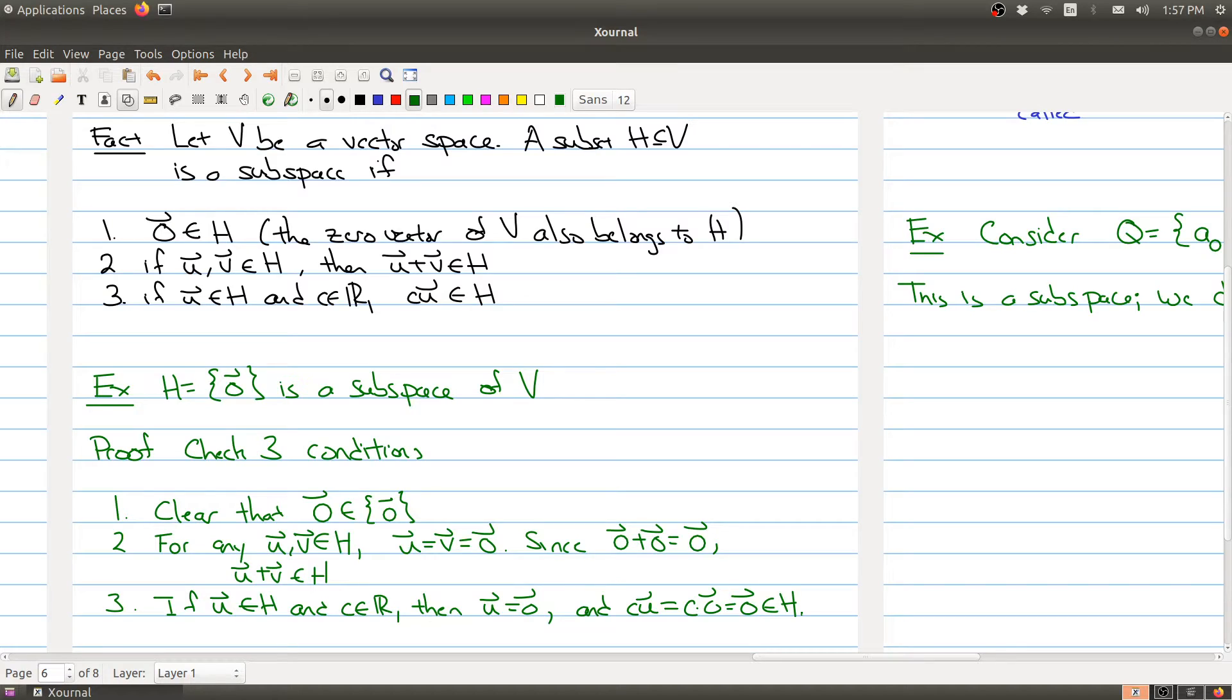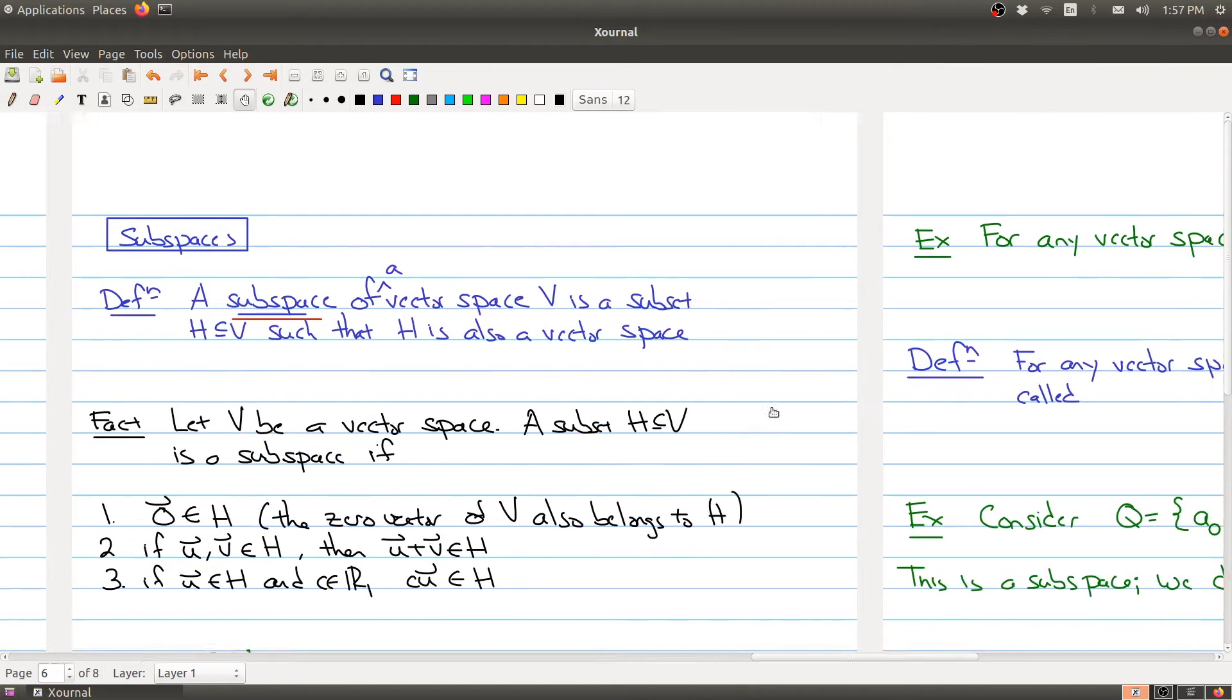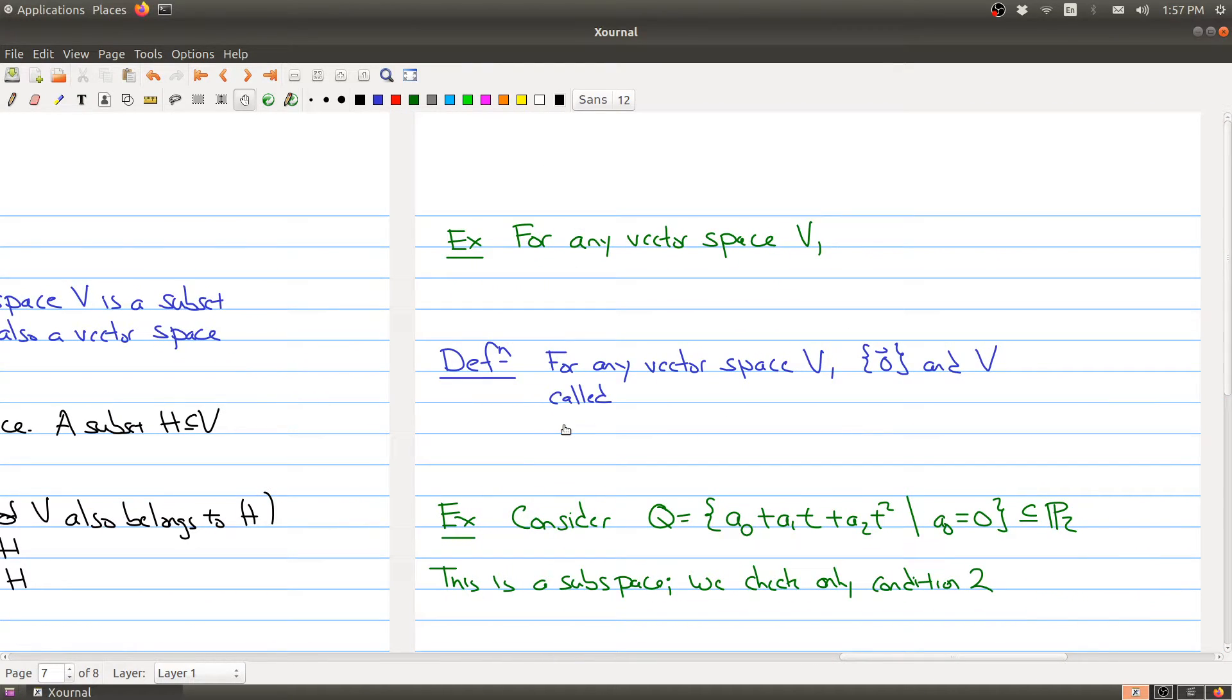So every vector space V has at least one subspace, namely the subspace containing itself. But there's actually another subspace that belongs to any vector space V, and that is itself. So for any vector space V, V is a subspace of itself. So that means any vector space has at least two subspaces, the zero space and the whole space itself.